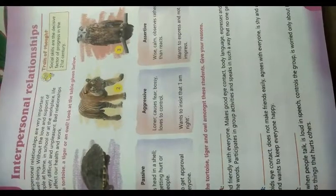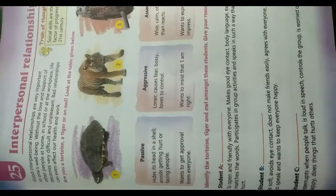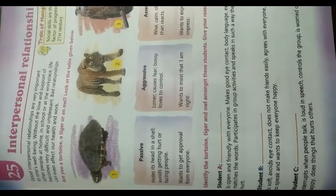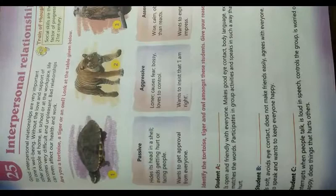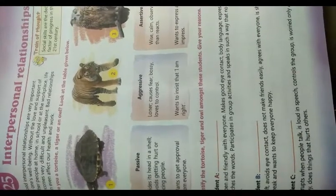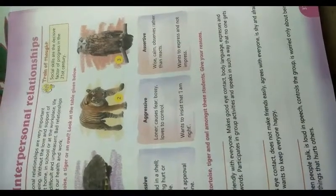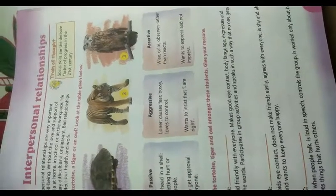The table shows three styles — passive, aggressive, and assertive. The tortoise: avoids getting hurt or facing people, wants approval from everyone. The tiger: causes fear, loves to control, wants to insist that 'I am right.' The owl: wise, calm, observes rather than reacts, wants to express and not impress.